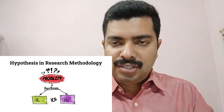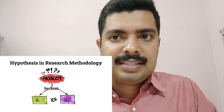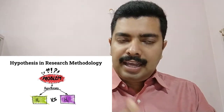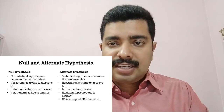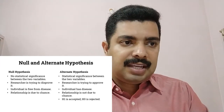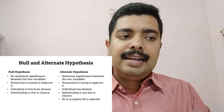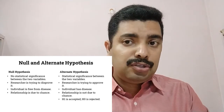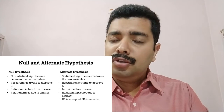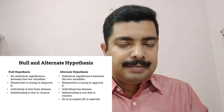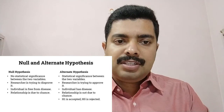To summarize today's session: we explained what hypothesis is and the two types — null hypothesis and alternate hypothesis. Null hypothesis has no statistical significance; alternate hypothesis has statistical significance. Null hypothesis is something the researcher is trying to disprove; alternate hypothesis is something the researcher is trying to prove. The relationship in null hypothesis is due to chance, whereas in alternate hypothesis the relationship is due to statistically proven data. When H1 is accepted, H0 is rejected. Thanks for watching. This is Jitin Benedict.